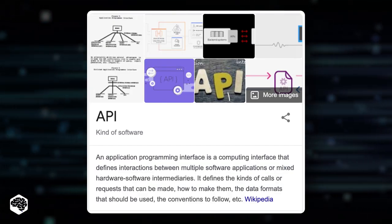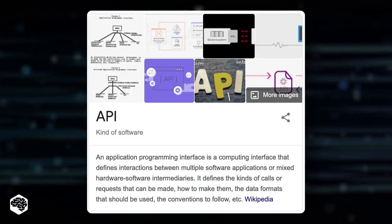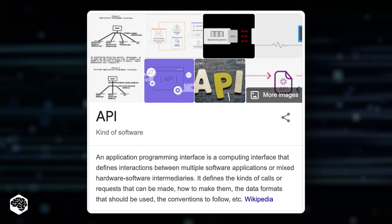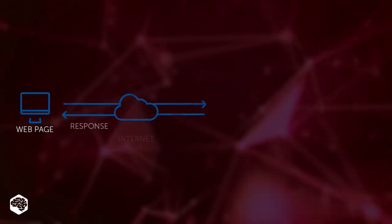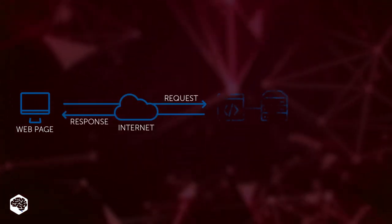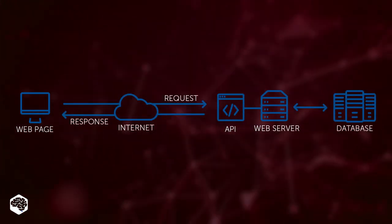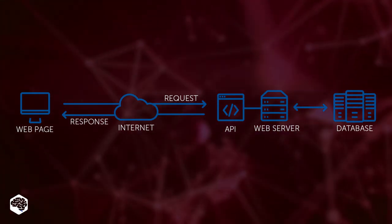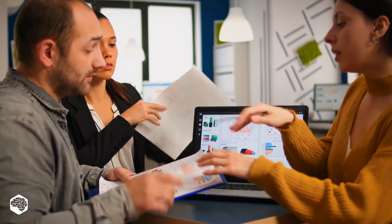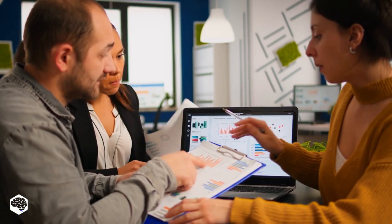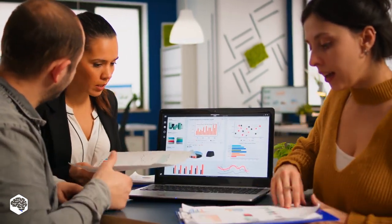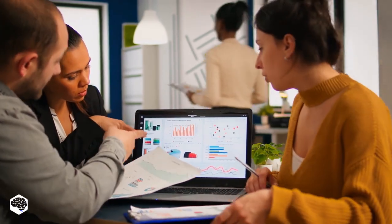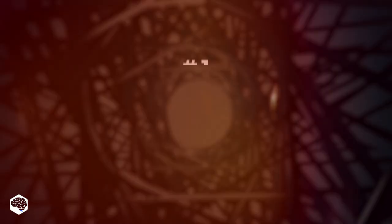Application Programming Interface defines the interactions between various software intermediaries. There are many different uses for API, and you don't need to be a developer or know anything about backend website and app development to use API. We will review different types of API as it pertains to specific industries and common uses, so keep watching to know more about them.